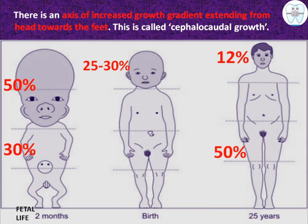In adult life, the head accounts for only 12%, whereas the limbs account for 50%. So there is an increased growth gradient extending from head towards the feet. In fetal life the head was 50%, at birth 25–30%, and at 25 years only 12%, while the limbs grew from 30% to 50%.